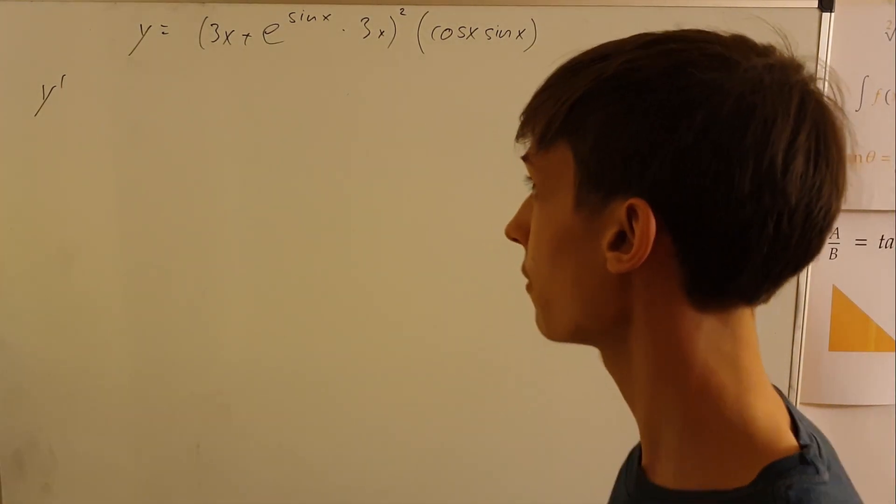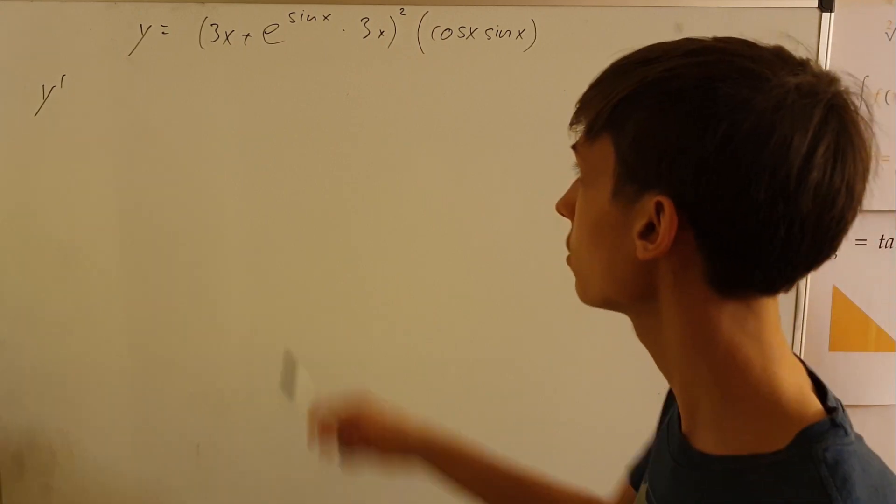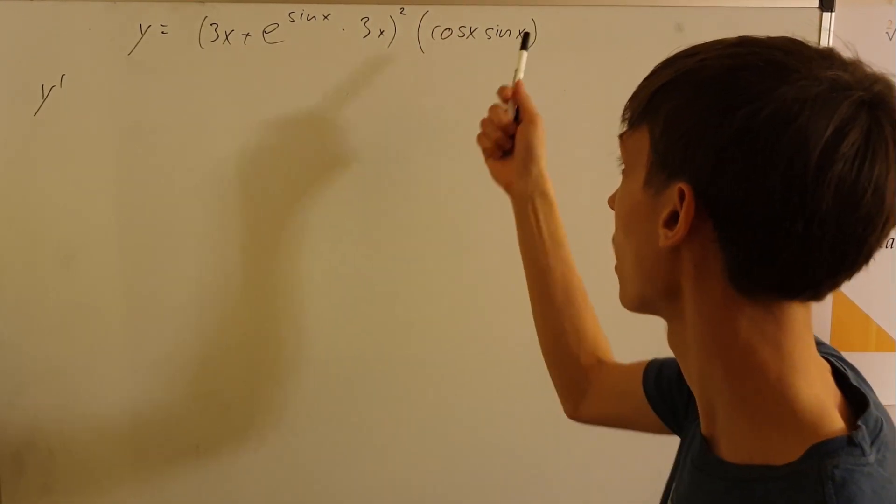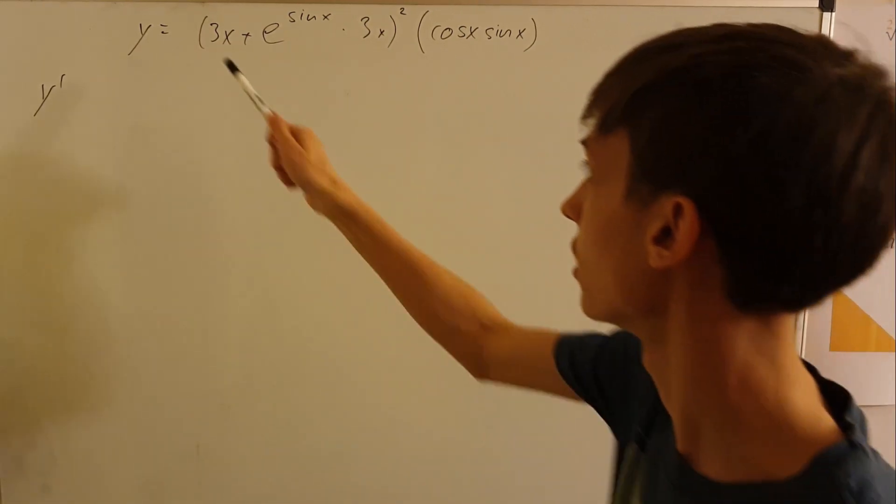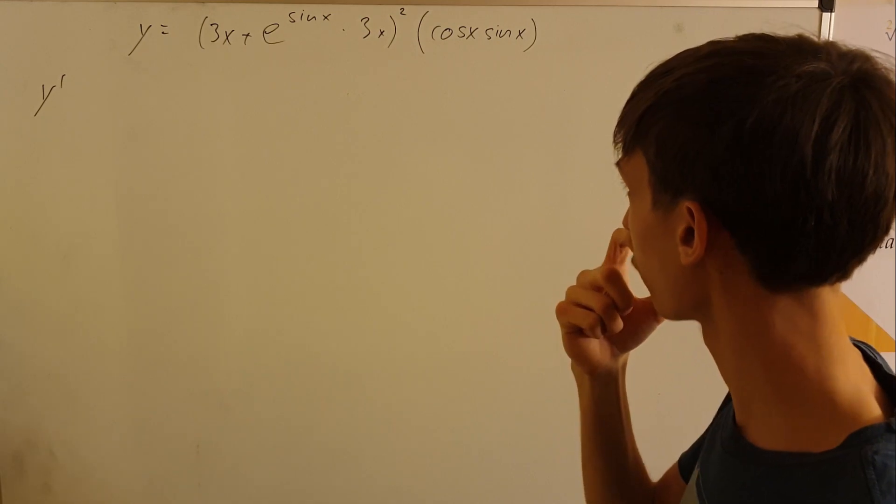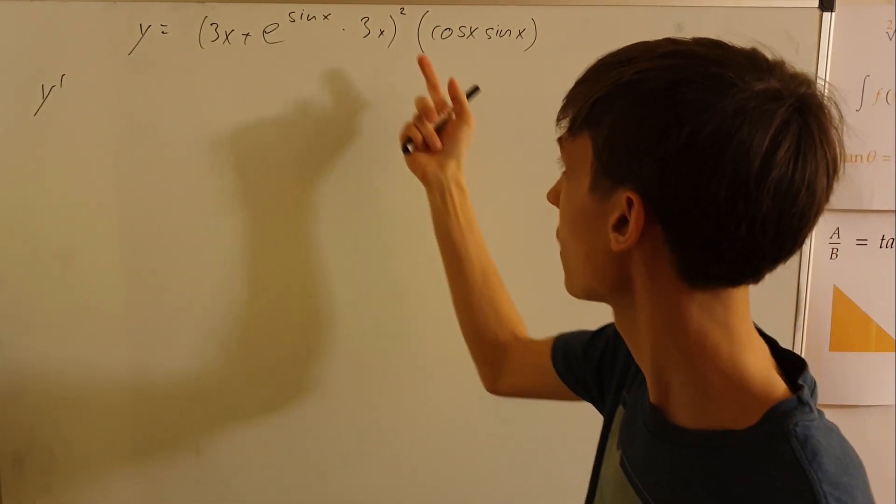Greetings, so today we are derivating y and we have y equal to 3x plus e to sin x times 3x all to the second power times cos x sin x. This is the first function, this is the second function. We could of course multiply certain things and look at it differently but we will just say our